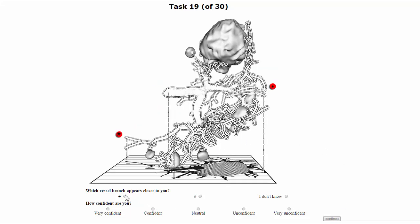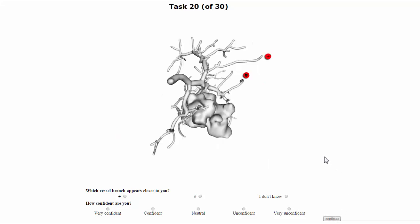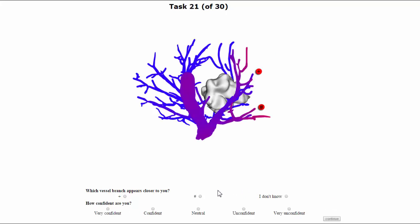We compared our illustrative visualization technique with pseudo-chroma depth rendering and standard Phong shading. Here, we asked which branch appears closer to the viewer, and the subjects were asked to rate their confidence on a five-point Likert confidence scale.